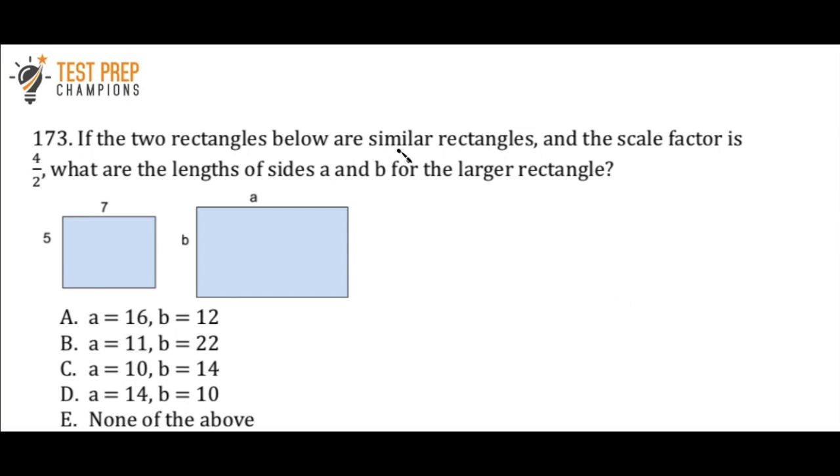Okay, so basically the first thing that I want to do here is take the scale factor, which is 4 over 2, and I'm just going to simplify this to 2, because 4 divided by 2 is 2. So now what we have to see here is that the side that's length 5 on the first rectangle is proportional to side B of the larger rectangle. So if I want to find the length of B, what I have to do is come over here and do 5 times 2. So since 5 times 2 is 10, B is length 10.